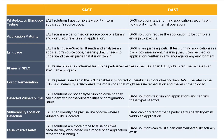In terms of detected vulnerabilities, SAST solutions do not analyze running code, so they can't identify runtime vulnerabilities or configuration issues. DAST solutions test running applications and can find these types of errors. In terms of vulnerability location detection, SAST can identify the precise line of code where a vulnerability is located, while DAST can only report that a particular vulnerability exists within an application.